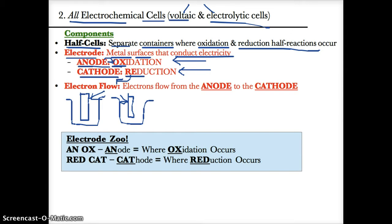A helpful way to remember where oxidation and reduction occur is the 'electrode zoo' saying: an ox and a red cat. 'An ox' tells you that anodes are where oxidation occurs, and 'red cat' tells you that reduction occurs at the cathode.